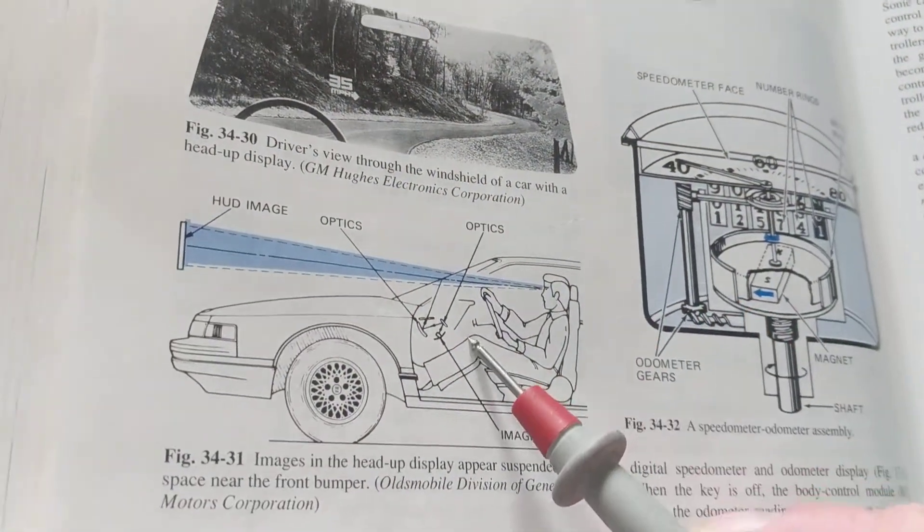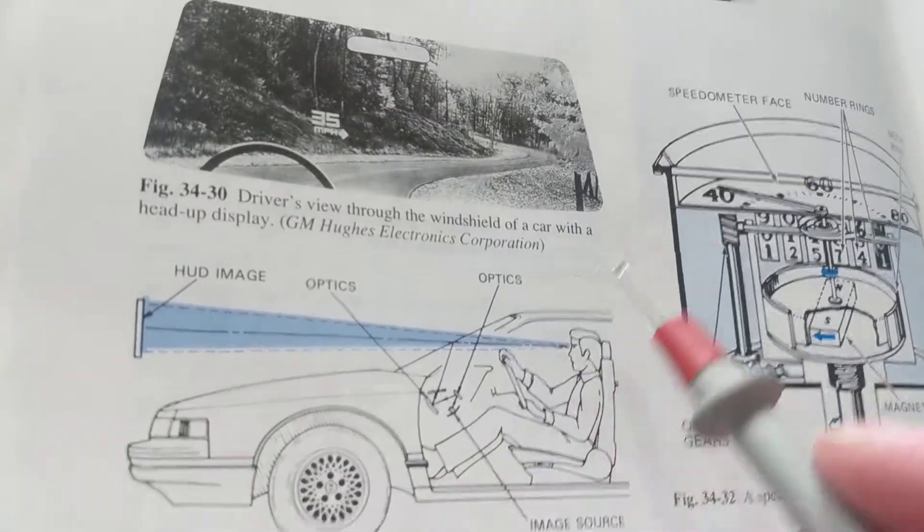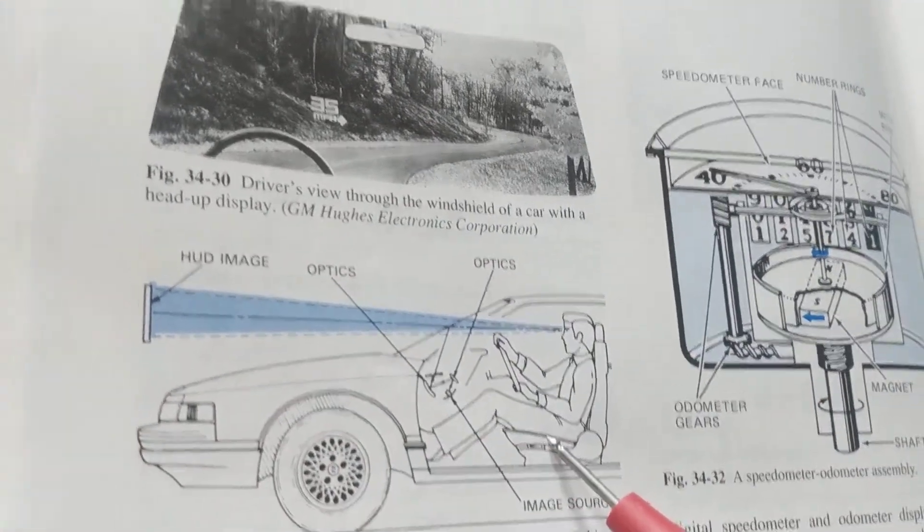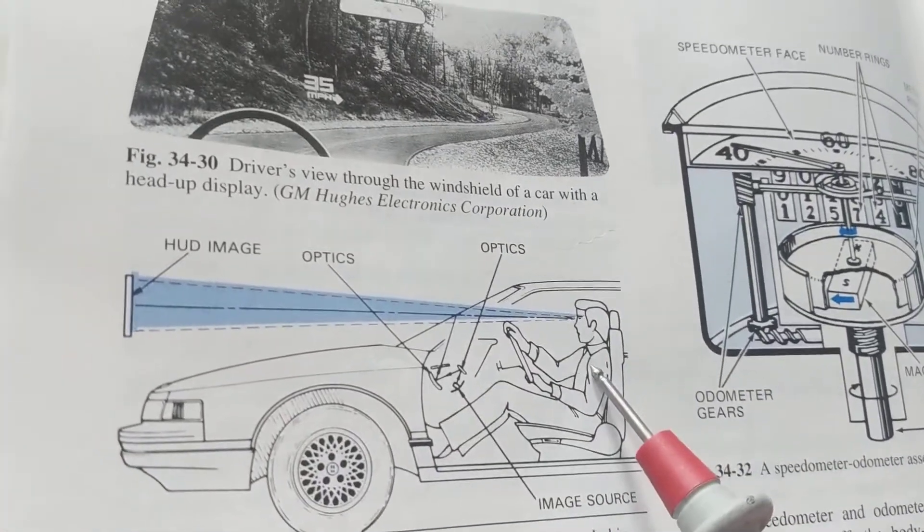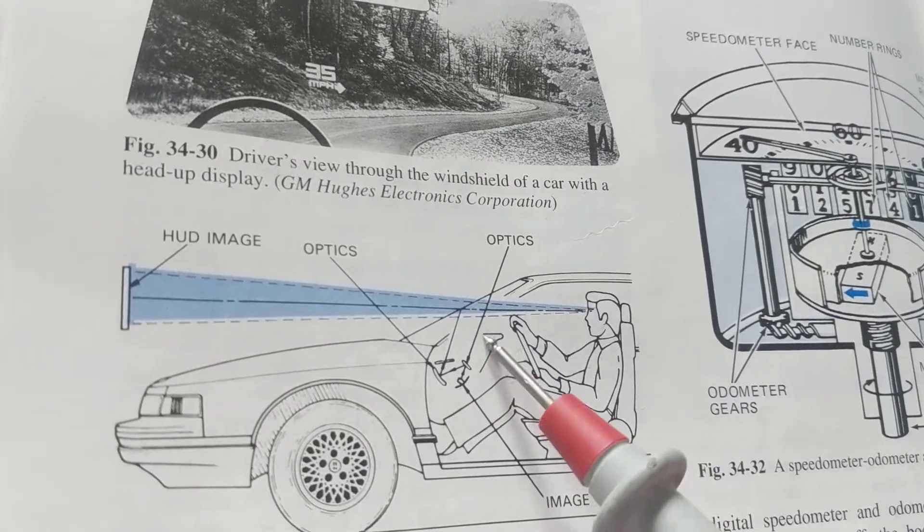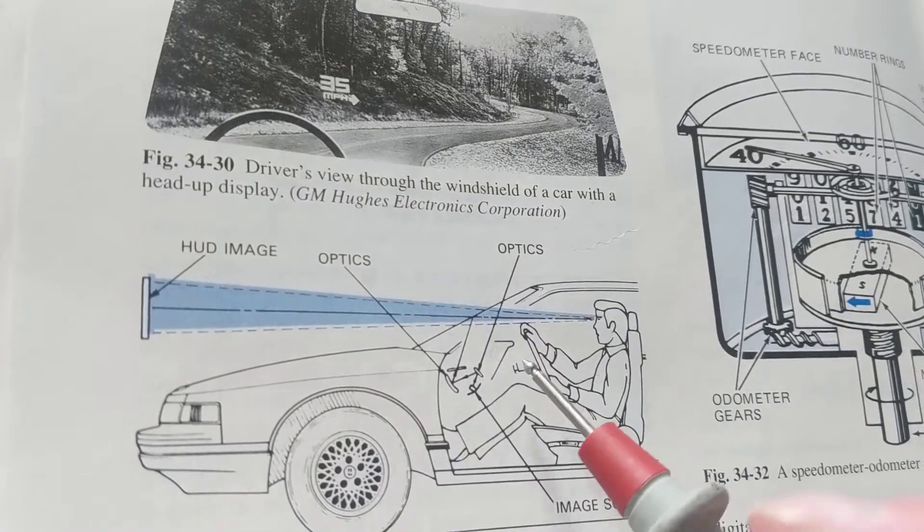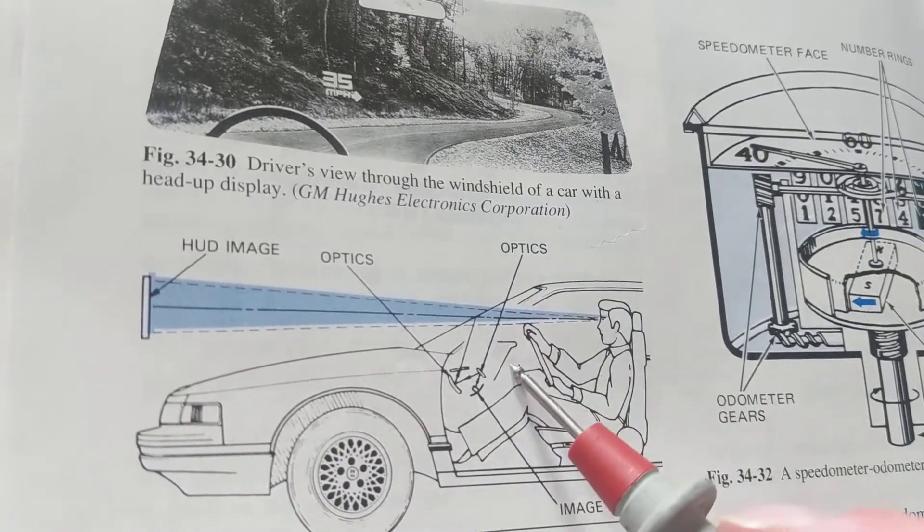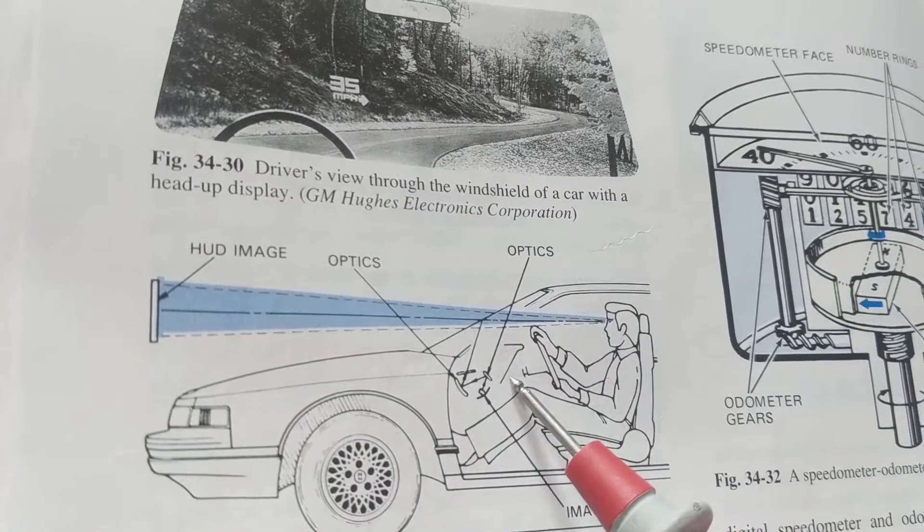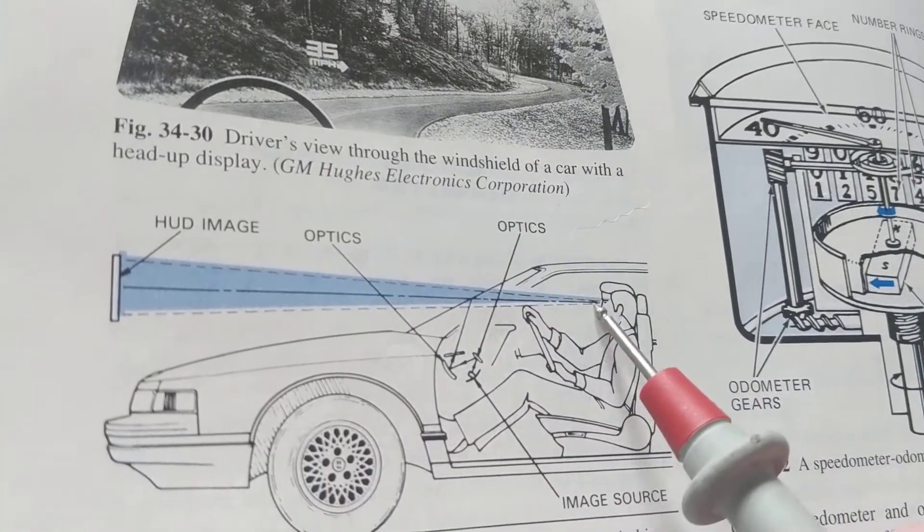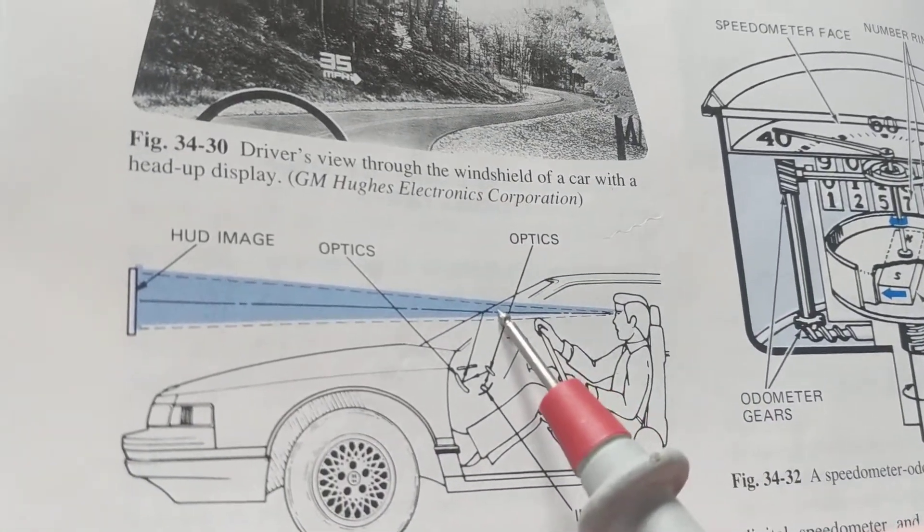Nevertheless, look at what it describes. Here's the driver. He doesn't have to look at the dashboard for information like speed or a tachometer or when he's making a turn. Look at this, it appears on his windshield through this thing called a HUD image. So he doesn't have to look down here, he looks here so that he could continue driving safely.